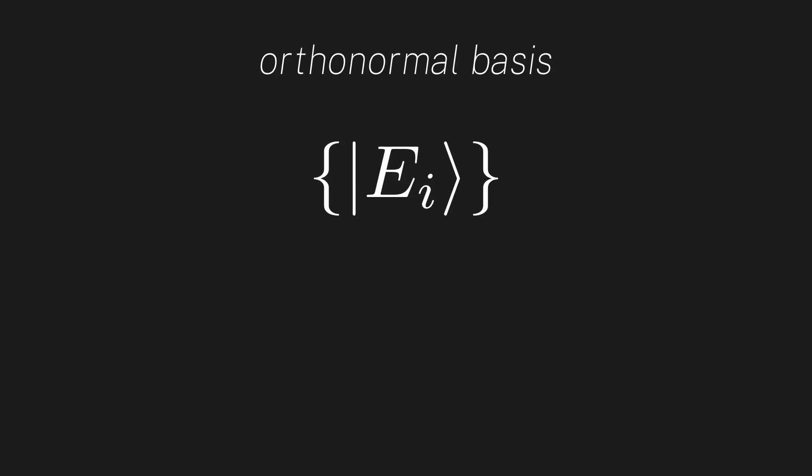With this, let's now use the inner product to see how it works in our quantum vector space. First, let's say we have an orthonormal basis, which means that each vector has length 1, and they are mutually orthogonal.